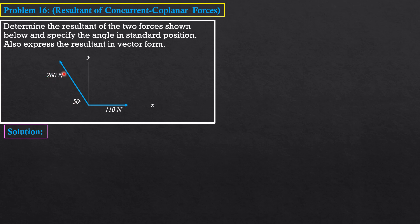The vertical component of 260 is positive because it is directed upward. Imagine a vertical line through the tip of the force downward and a horizontal line to the right, so we can form a right triangle. The horizontal component is leftward: negative 260 cosine 50°. The vertical component is 260 sine 50°.